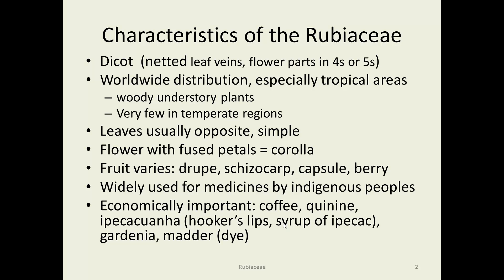They're widely used for medicines by indigenous people. There are a lot of strange alkaloids and different things in these species. Economically, these rank high — coffee especially, but also quinine, syrup of ipecac, the gardenia as a landscaping plant, and madder, which is used to make a dye, among others.